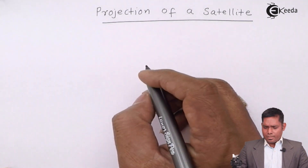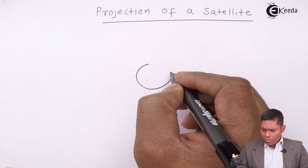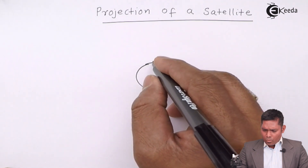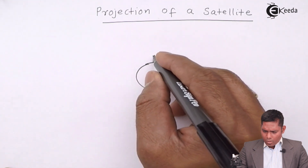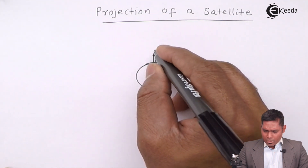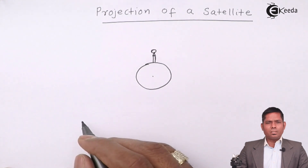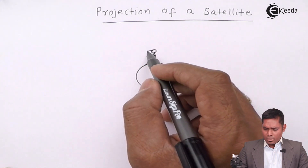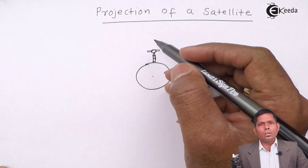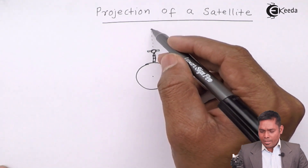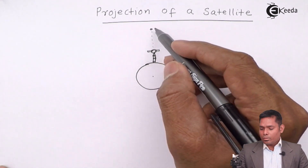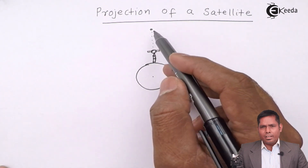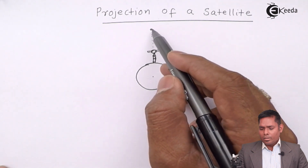In the projection of a satellite, the satellite is kept at the tip of a multistage rocket — minimum two stages. The function of the first stage is to take the satellite to a certain desired height where we want it to revolve around Earth. As soon as that height is reached, the first stage is disengaged, the second stage is burned, and the satellite is turned 90 degrees.